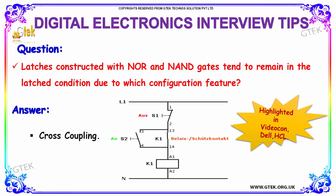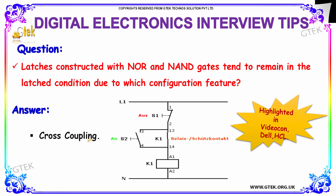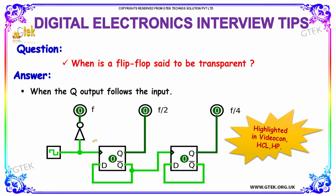The next question is: latches constructed with NOR and NAND gates tend to remain in the latched condition due to which configuration feature? The answer is cross coupling. The following question is: when is a flip-flop said to be transparent? The flip-flop is said to be transparent when the output follows the input.